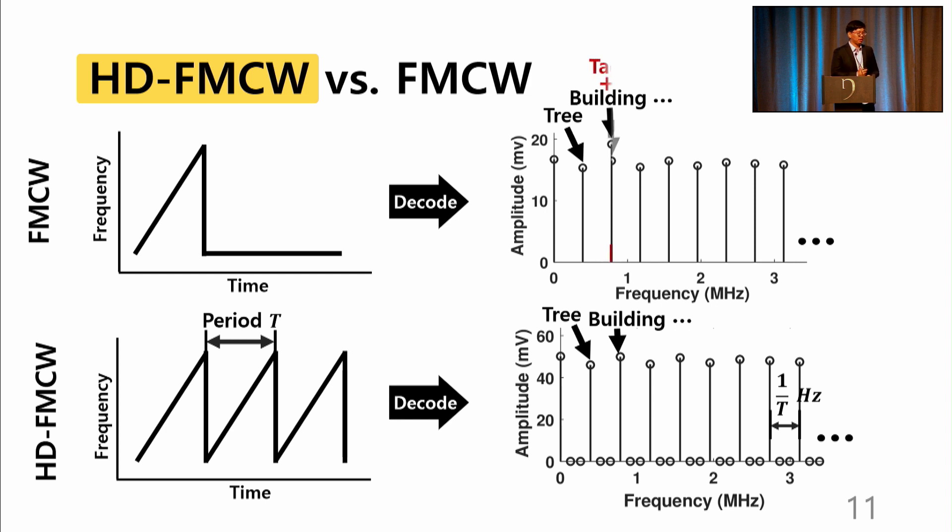In FMCW, the tag signal is summed up on top of the clutter noise. While in HD-FMCW, the tag signal is represented at exclusive frequency bins separate from the clutter.